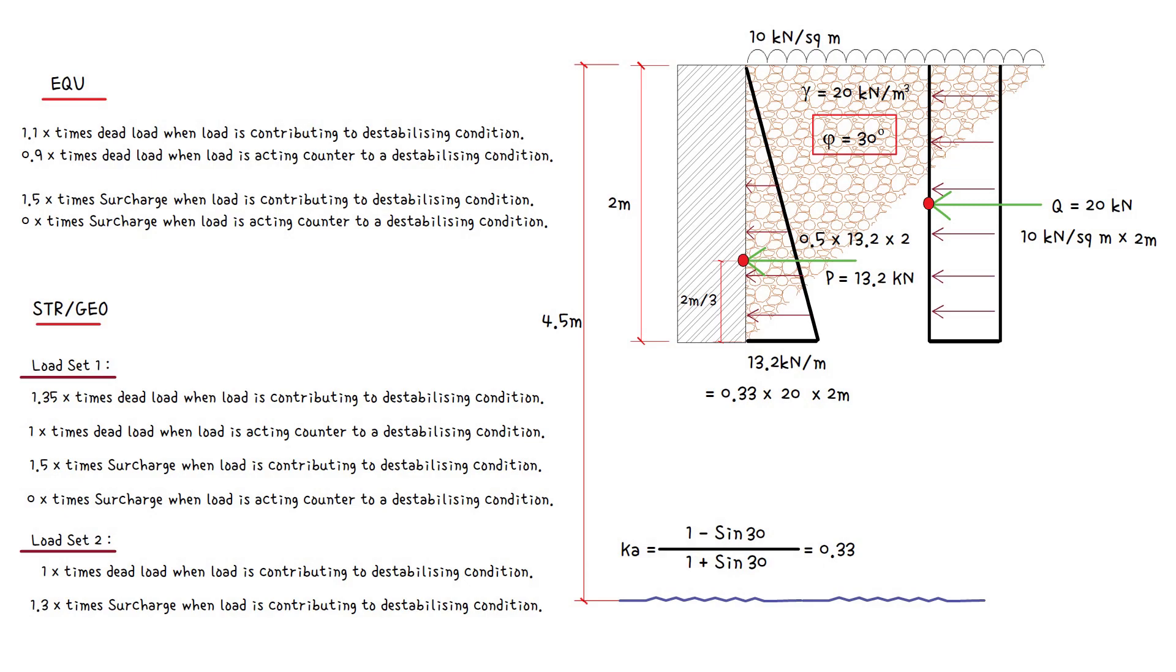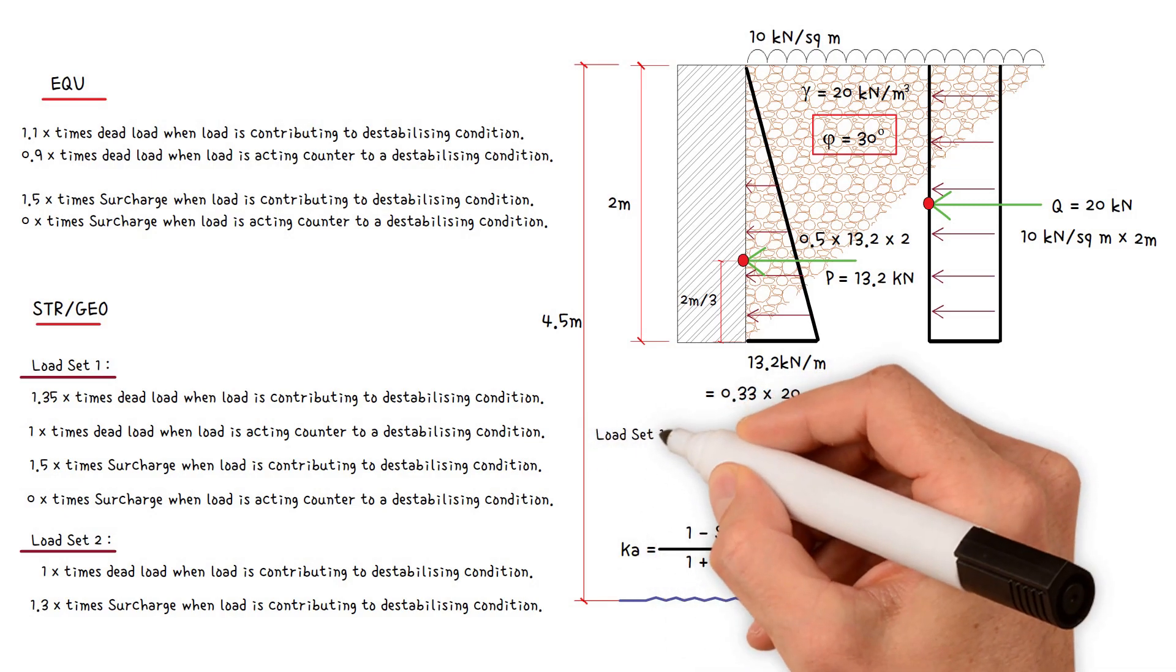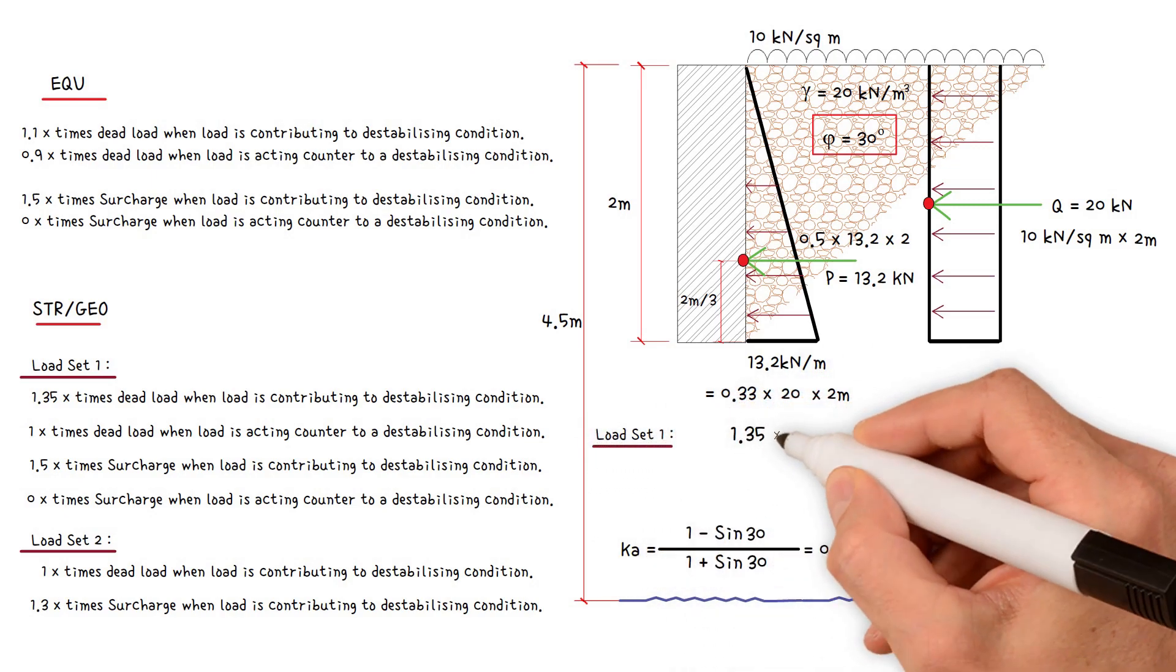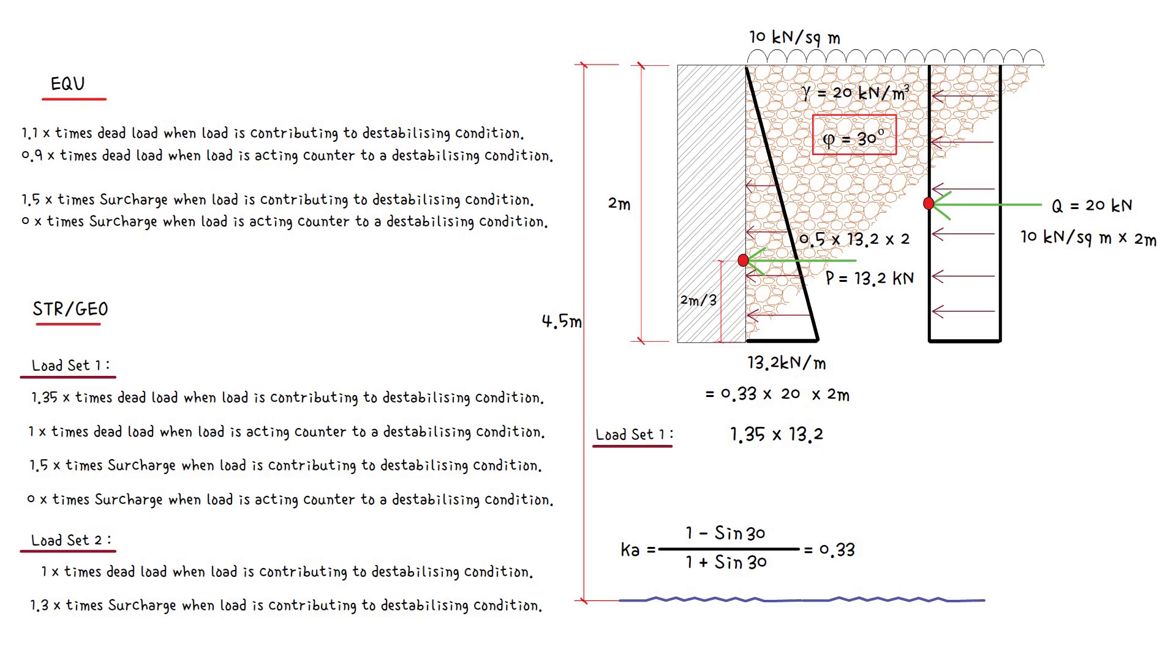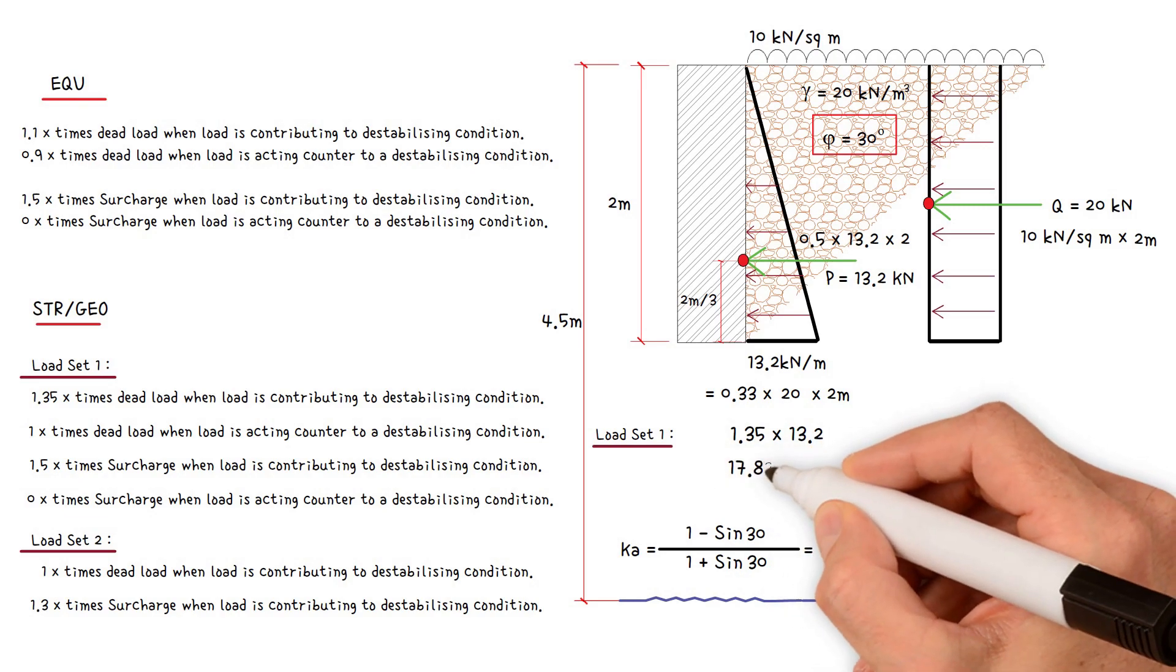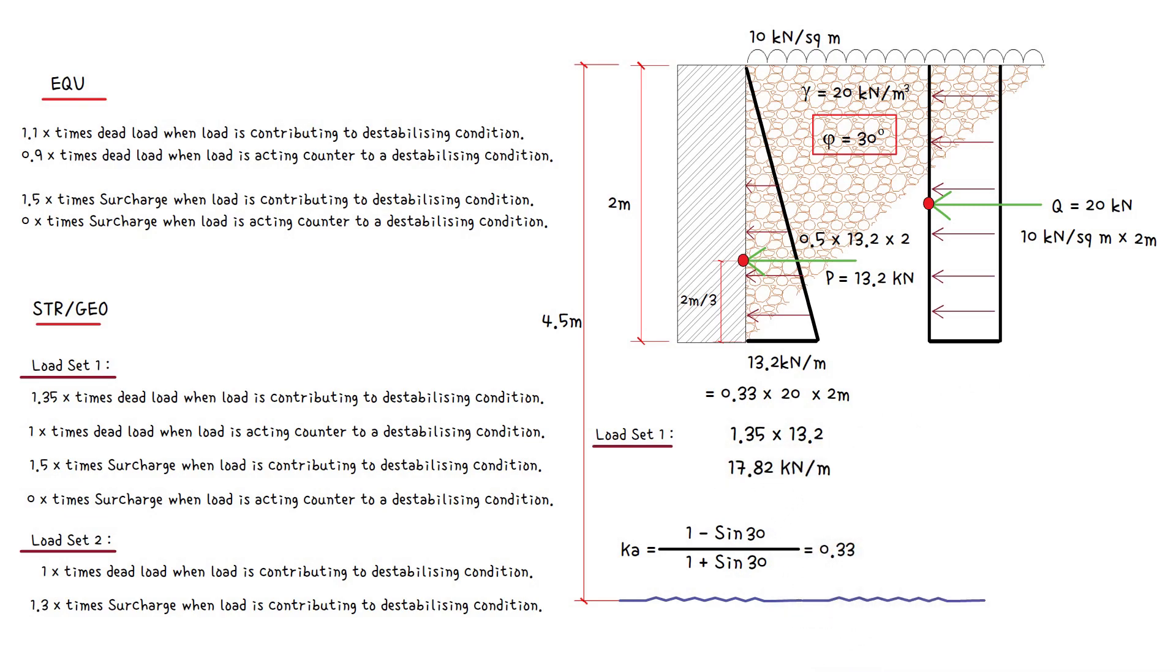Back to our worked example. To calculate the ultimate loads for designing the wall, we would have load set 1: 1.35 times 13.2, which equals 17.82 kN per meter, and 1.5 times 20, which equals 30 kN per meter.